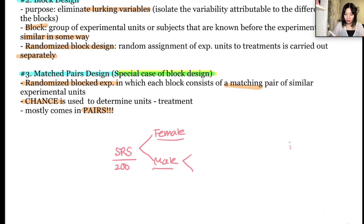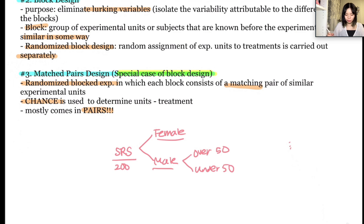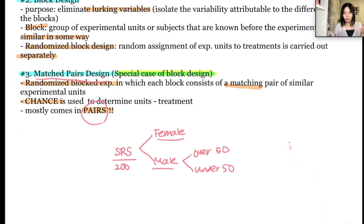They can also separate the male participants by age — so there will be some participants over 50 and some under 50. This is what matched pairs design looks like, because it comes in pairs or a variable that can be divided into two parts, like female/male or under 50/over 50.